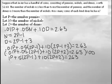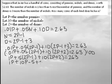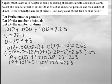Now let's distribute. 5 times 2p is 10p, 5 times negative 1 is negative 5, 10 times 2p is 20p, and 10 times 2 is 20. That equals 263.